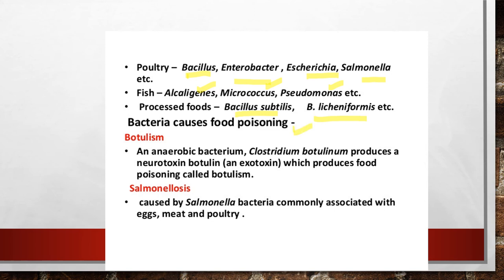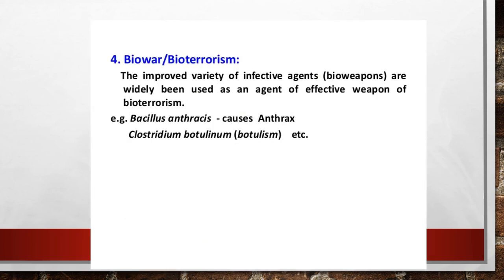Bacteria also cause food poisoning. Botulism: an anaerobic bacterium called Clostridium botulinum produces a neurotoxin called botulin, which is an exotoxin, causing poisoning called botulism. Salmonellosis is caused by the bacterium Salmonella and is associated with eggs, meat, and poultry. Bacteria are also used in bioterrorism — improved varieties of infective agents as bio weapons include Bacillus anthracis, which causes anthrax, and Clostridium botulinum.